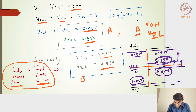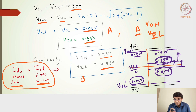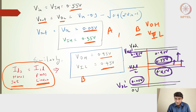For a skewed inverter, VOH and VOL values may not change much, but the VIL and VIH values will shift significantly. The offset means the threshold voltage moves away from VDD/2, so both VIL and VIH points will be offset at a higher or lower value depending on the skew direction.